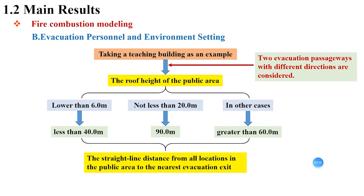When the roof height of the public area is lower than 6 meters, the straight line distance from all locations in public area to the nearest evacuation exit should be less than 40 meters. When the average height in the area is not less than 20 meters, it is 90 meters. In other cases, it should not be greater than 60 meters.